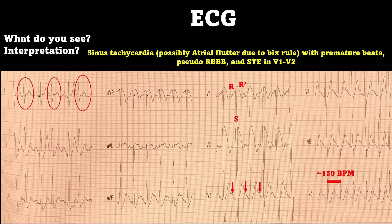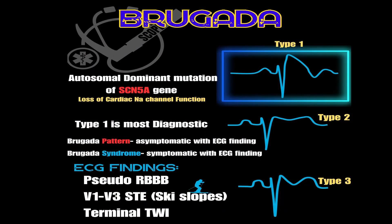Why do we have ST elevation in V1 and V2? Brugada — you have Brugada pattern and Brugada syndrome. Brugada syndrome is an inheritable autosomal dominant gene mutation of the SCN5A gene, which is the most common, and can cause sudden cardiac arrest. This gene mutation results in the loss of sodium channel function and action potentials of the epicardial cells near the right ventricular outflow tract, creating a transmural voltage gradient which gives rise to the EKG findings. Clinical features to look out for include nocturnal agonal respirations, dysrhythmias occurring more often at night, palpitations, and syncope.